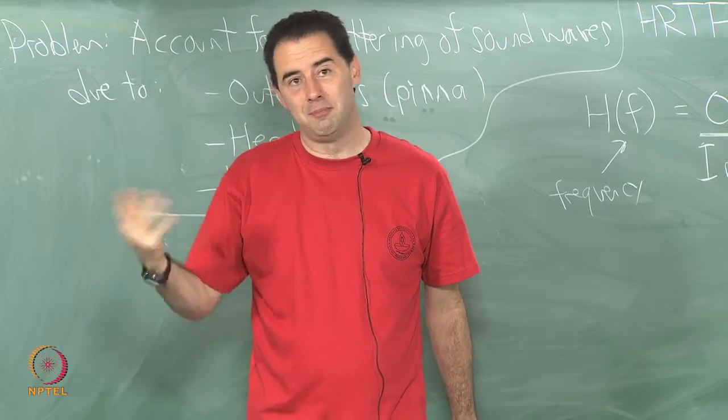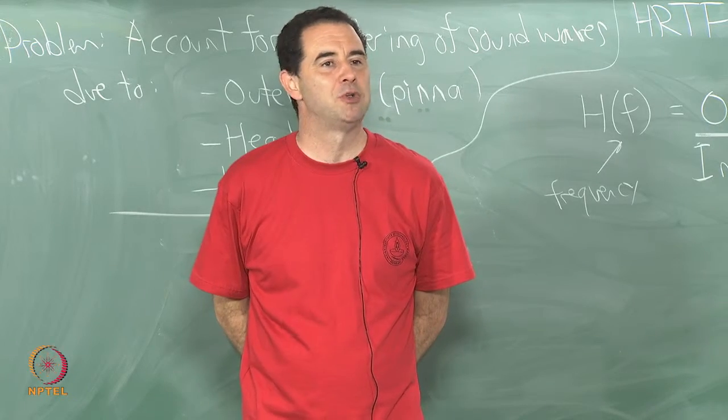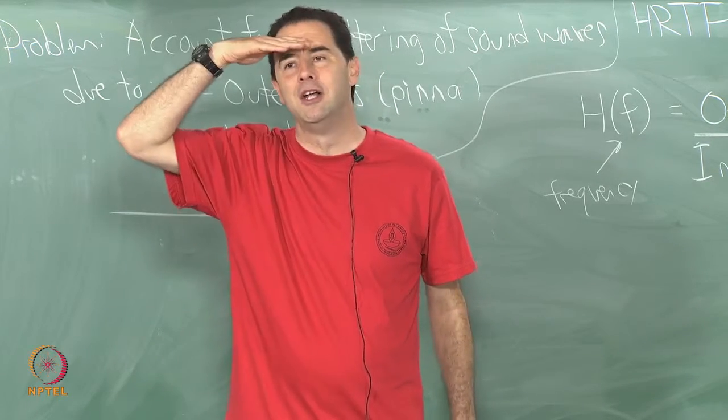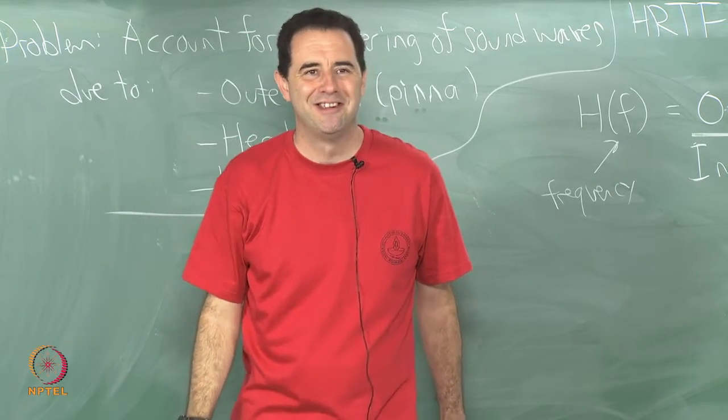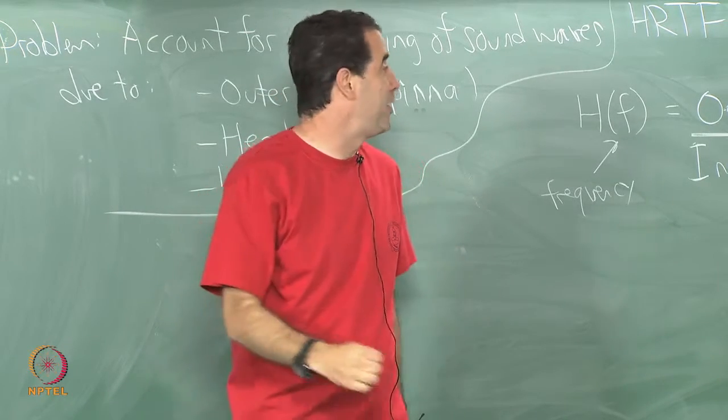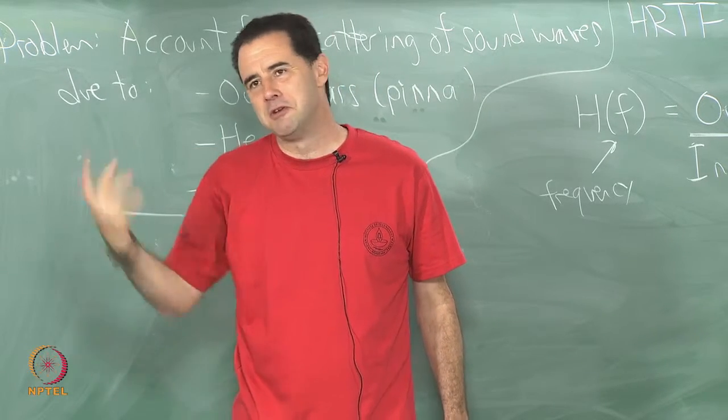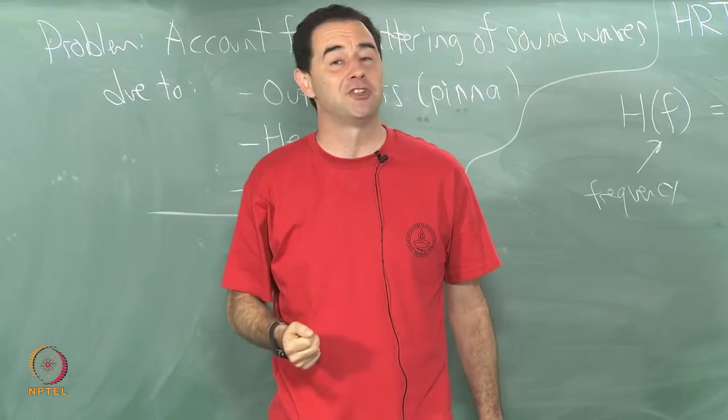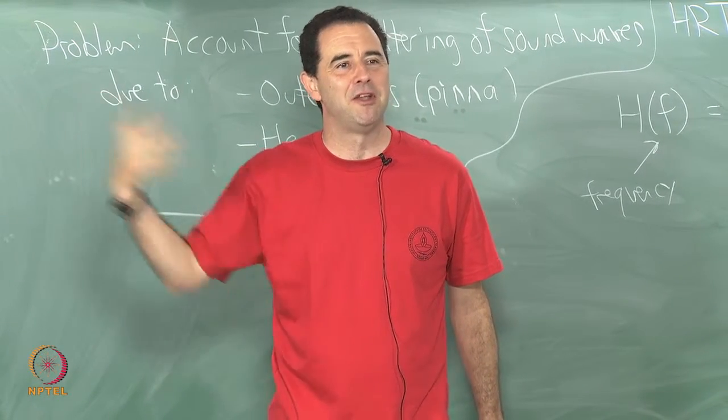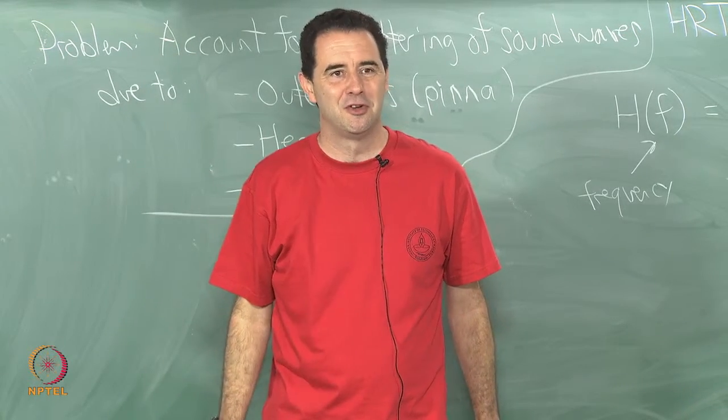However, our brains due to the kind of plasticity and adaptability that we have, we may be able to adapt. If you all of a sudden put on some big Texas cowboy hat, that will definitely affect the scattering of sound as it comes into the ears, but you can adjust to that. After maybe, who knows how long, I will just make up a time, after 20 minutes of wearing the big Texas cowboy hat you may be able to then localize sounds just as effectively as you could when the hat was off.